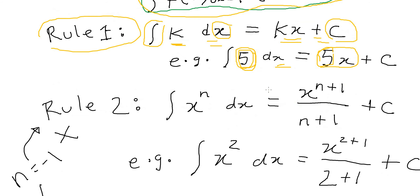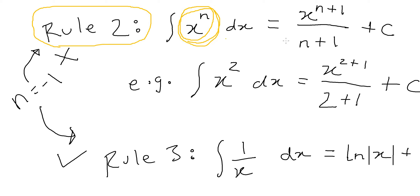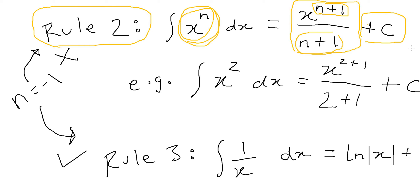Naturally you'll ask: what if we have a variable? Well, we have Rule 2 for that. This rule covers the situation where your integrand is a variable. When you integrate it, the original function is obtained by adding one to the power exponent, then writing that new exponent in the denominator. And of course there can be a constant attached, so we add plus C.